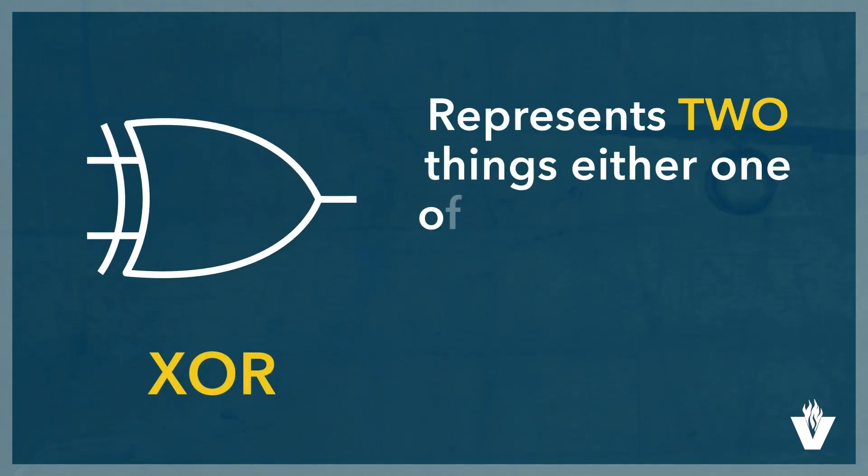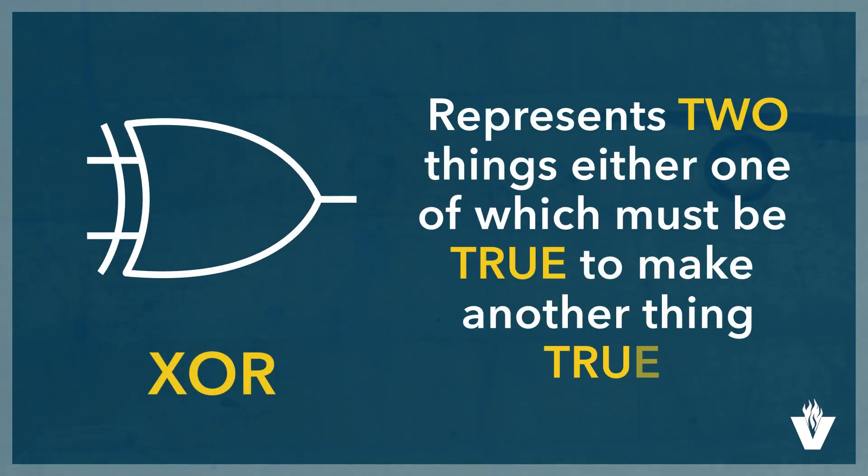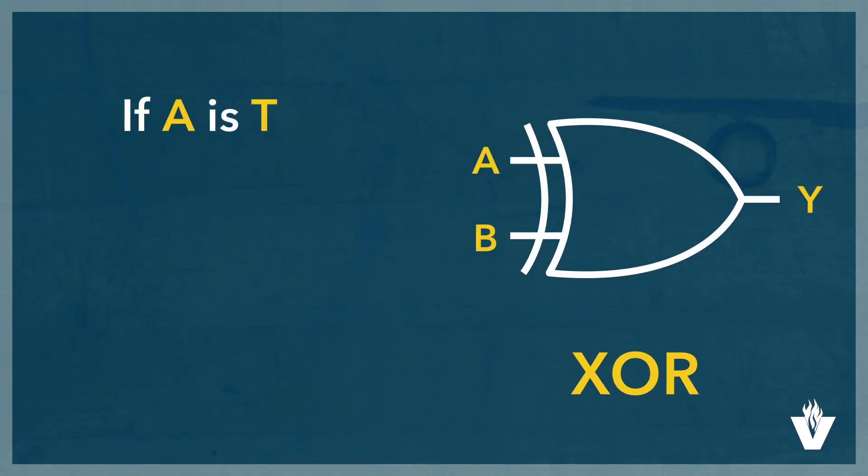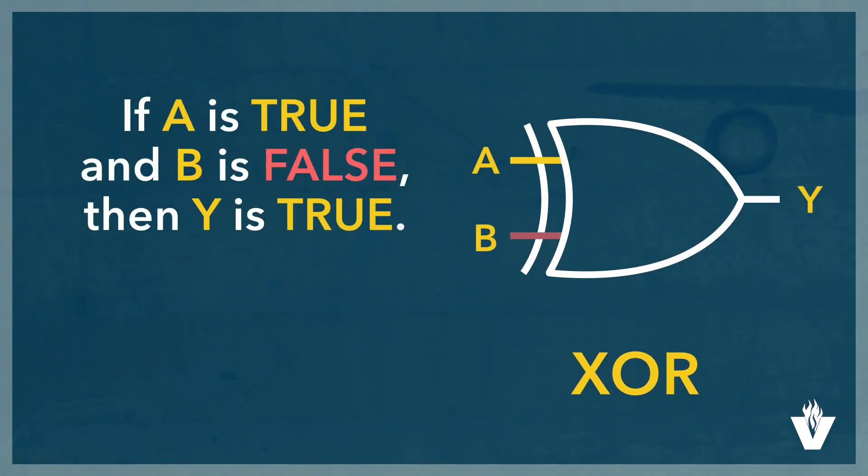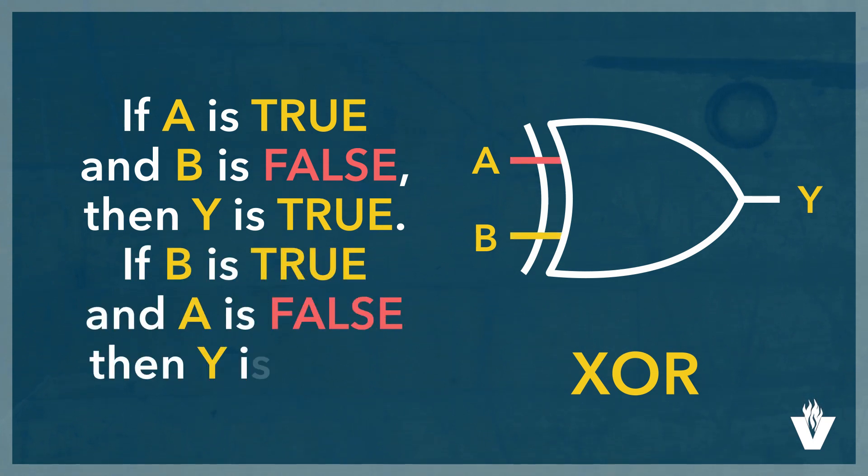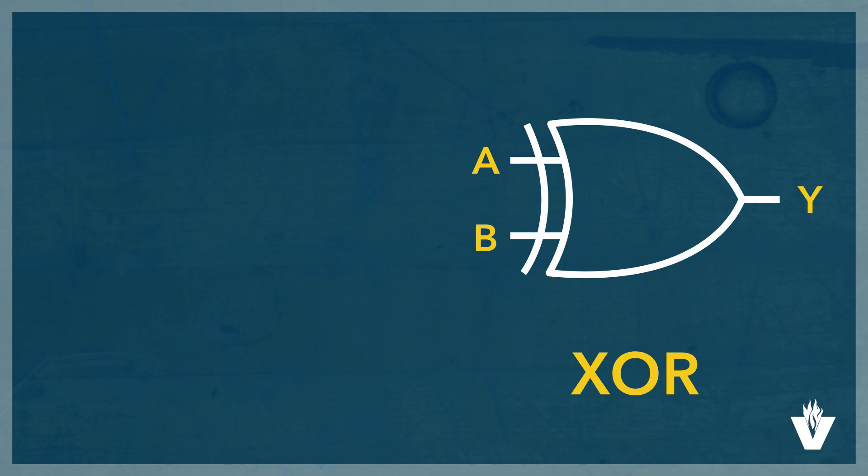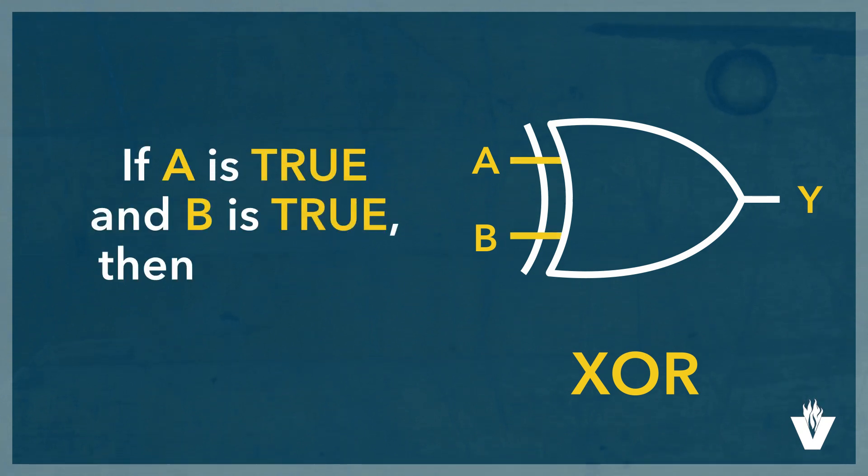The EXCLUSIVE OR gate represents two things, either one of which must be true to make another thing true. If A is true and B is false, then Y is true. If B is true and A is false, then Y is true. Note that this time, if A is true and B is true, then Y will be false. This is the only difference between the OR function and the EXCLUSIVE OR function.